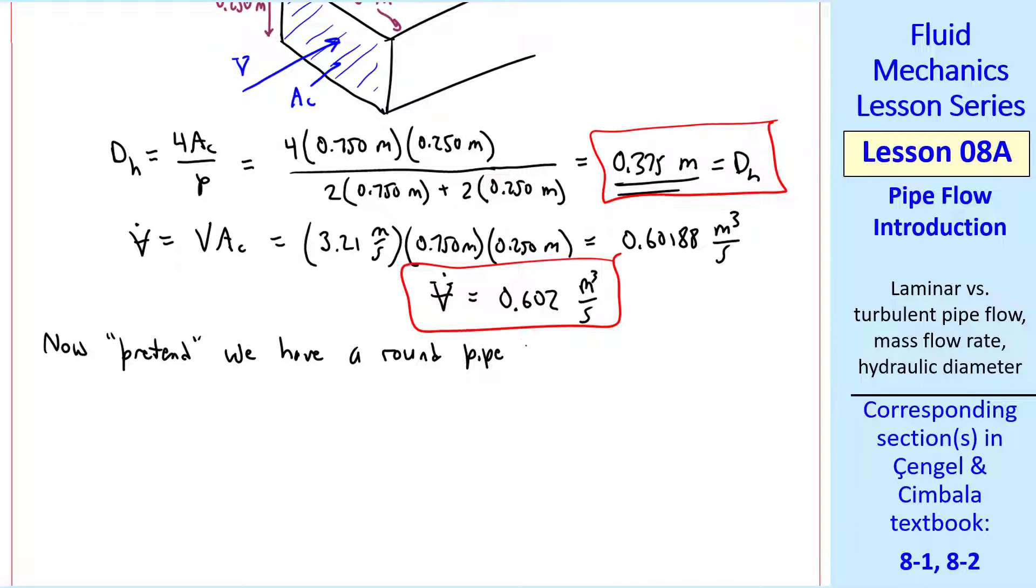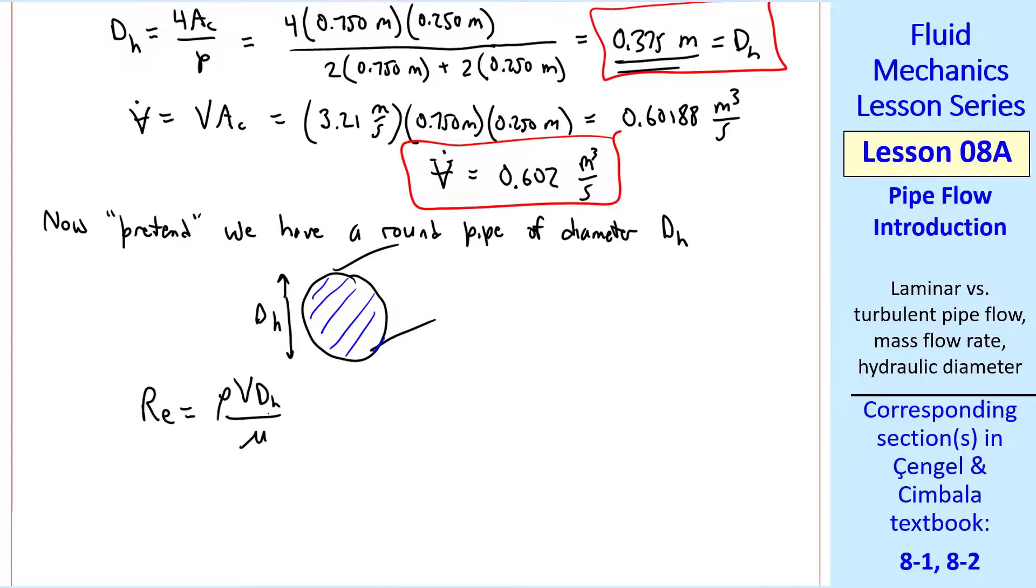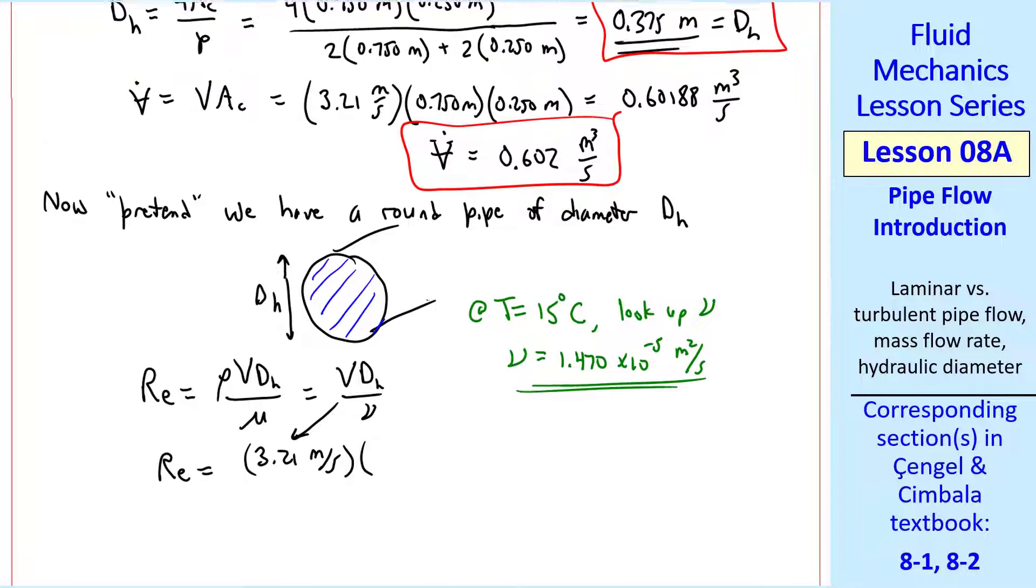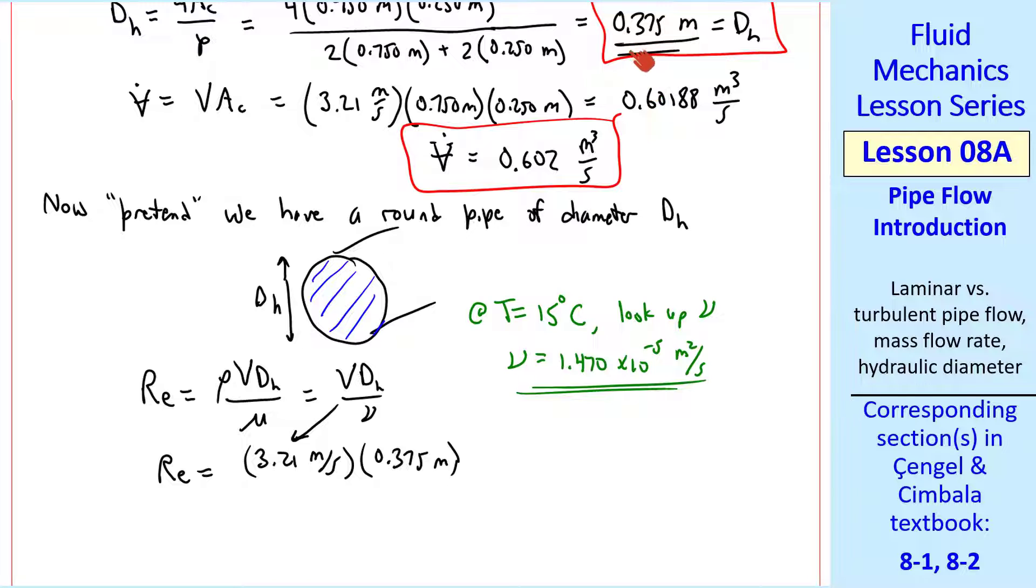Now we pretend we have a round pipe of diameter DH. So to calculate Reynolds number, RE is rho VDH over mu, or VDH over nu. At T equal 15 degrees C, we look up nu in the tables. In our book in the appendices, we get this value of nu. So the Reynolds number is 3.21 meters per second times the hydraulic diameter from up here, 0.375 meters, divided by nu, which gives us 81,900 to 3 digits.